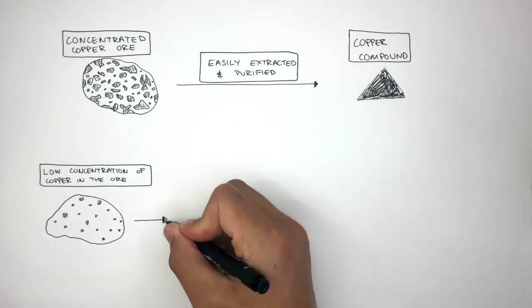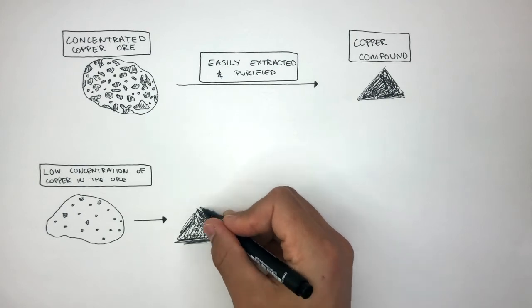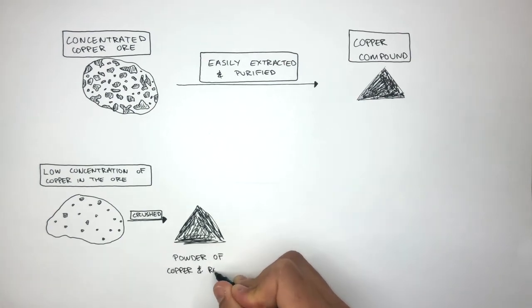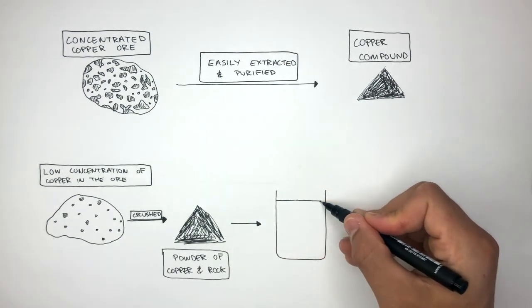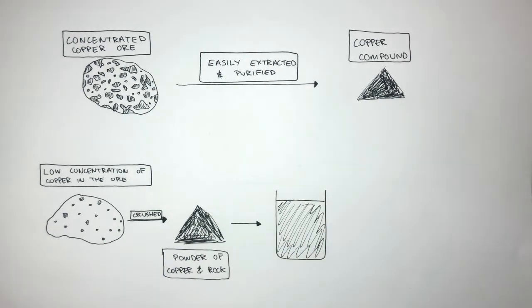The first stage is to crush the ore into a powder of copper and rock. So to begin with, the ore is crushed into a powder of copper and rock. In the next stage, we need a beaker which is filled with water, and we put the powder of copper and rock in the water inside of the beaker.